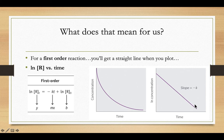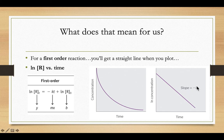It must be first order, because when we do the natural log of our concentration versus time, we get a straight line. All you need to do is plot the natural log of the concentration versus time. If you get a straight line, that's how you know it's first order with respect to that particular chemical. And the slope is going to be the negative of the rate law constant — so if the slope was negative three, our K value would be three.